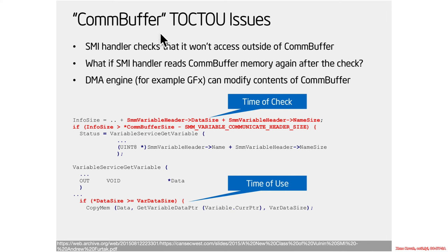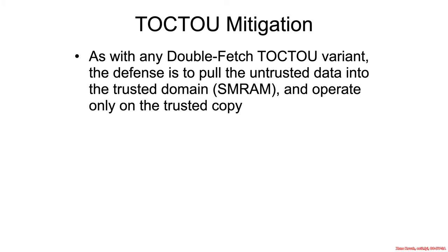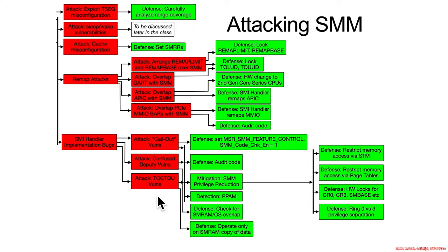This spatial separation — the check up here, proceeding down, and a use down here — means an attacker could come in and DMA and change the contents. It's coming from a comm buffer which is outside of SMM. This particular type of TOCTOU is called a double fetch vulnerability, because it's reading something outside of its control and then reading it again later on. The standard mitigation is to basically not double fetch — just fetch once. Get a copy, pull it into SMM, and use only that copy in SMM so that it is not subsequently vulnerable to manipulation by a DMA attacker outside of SMM.